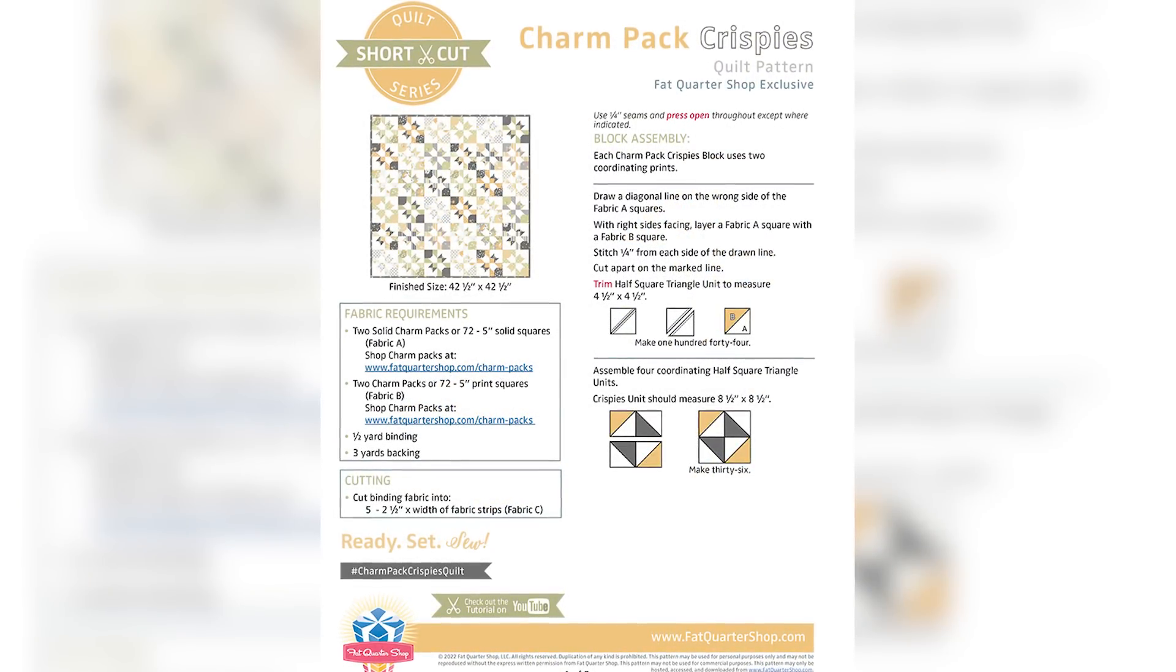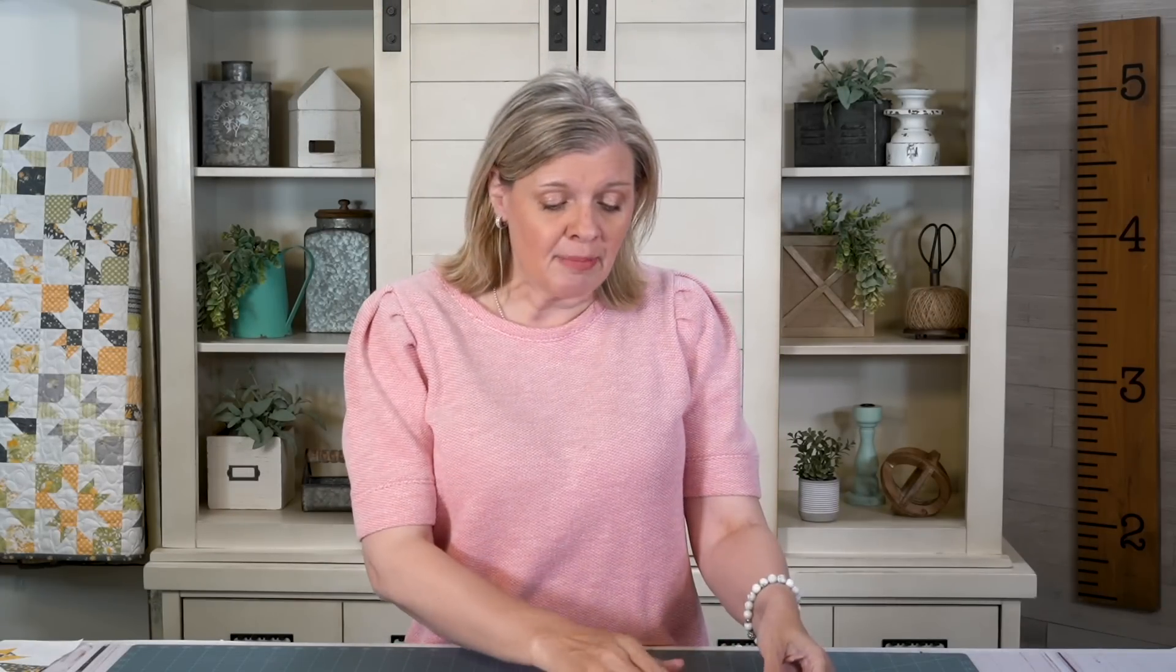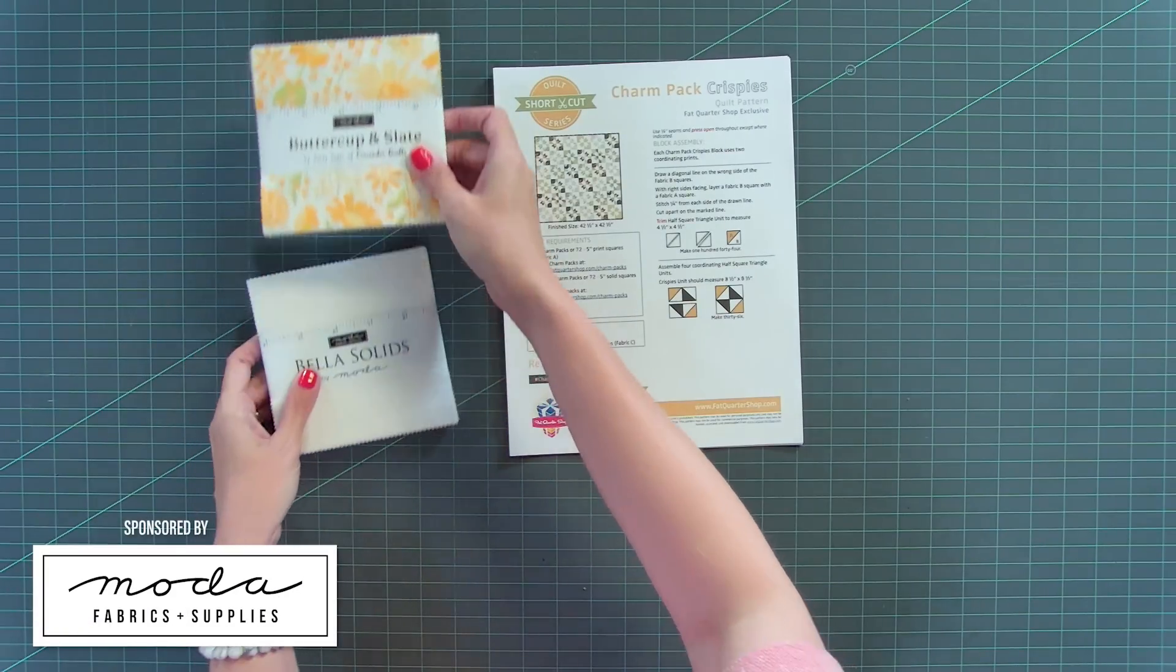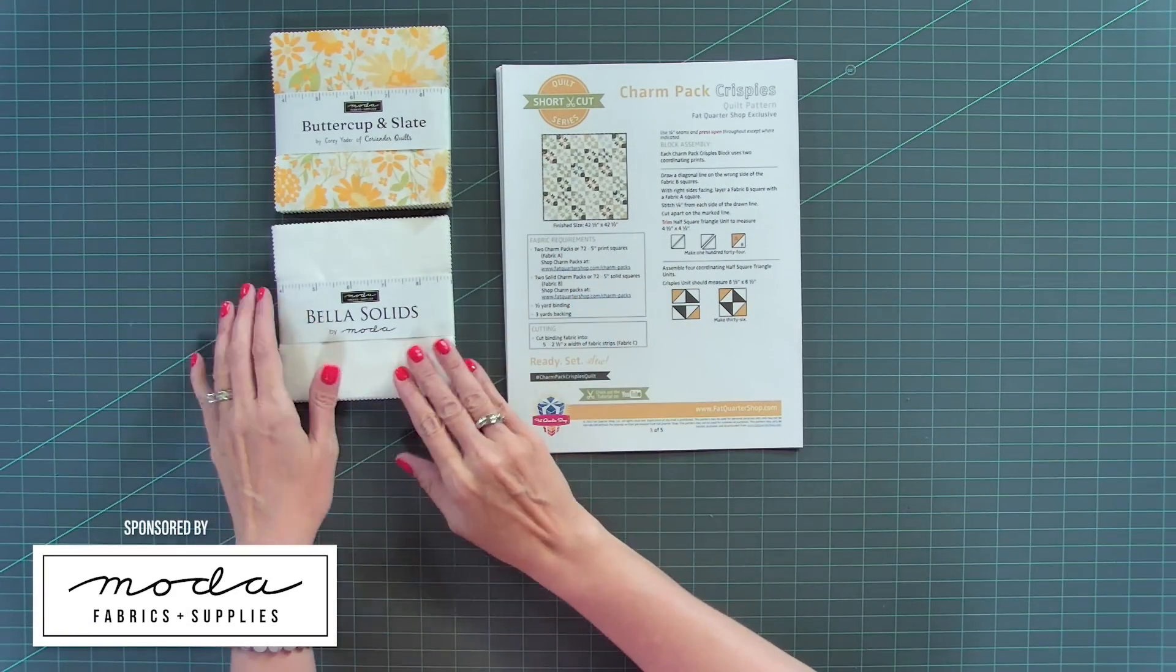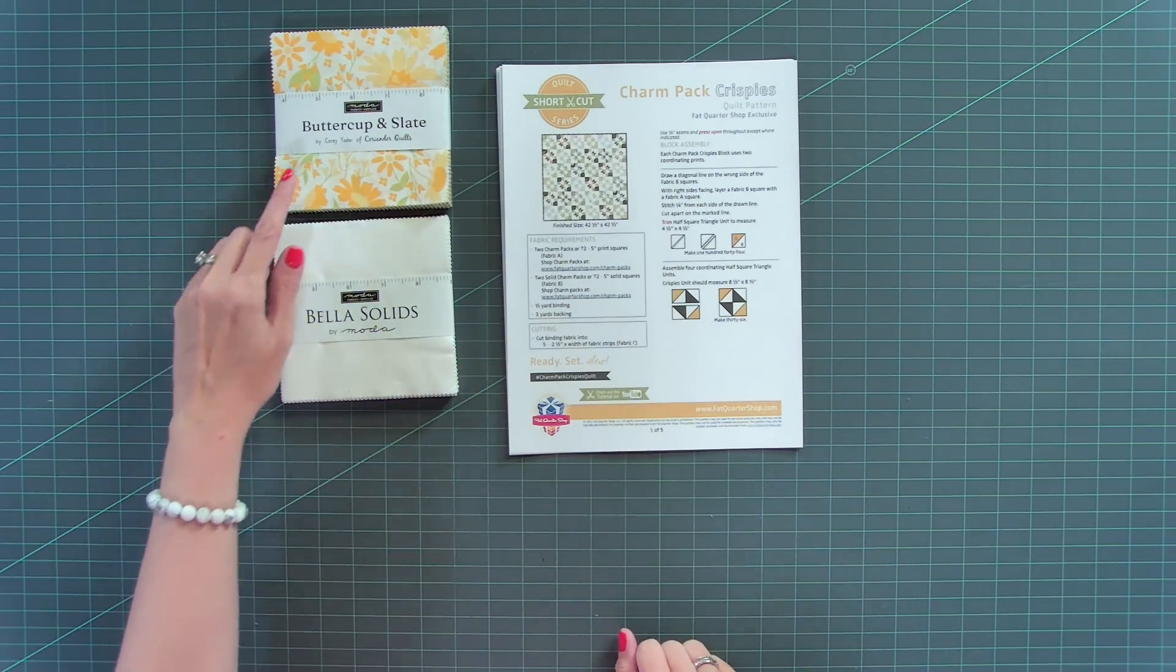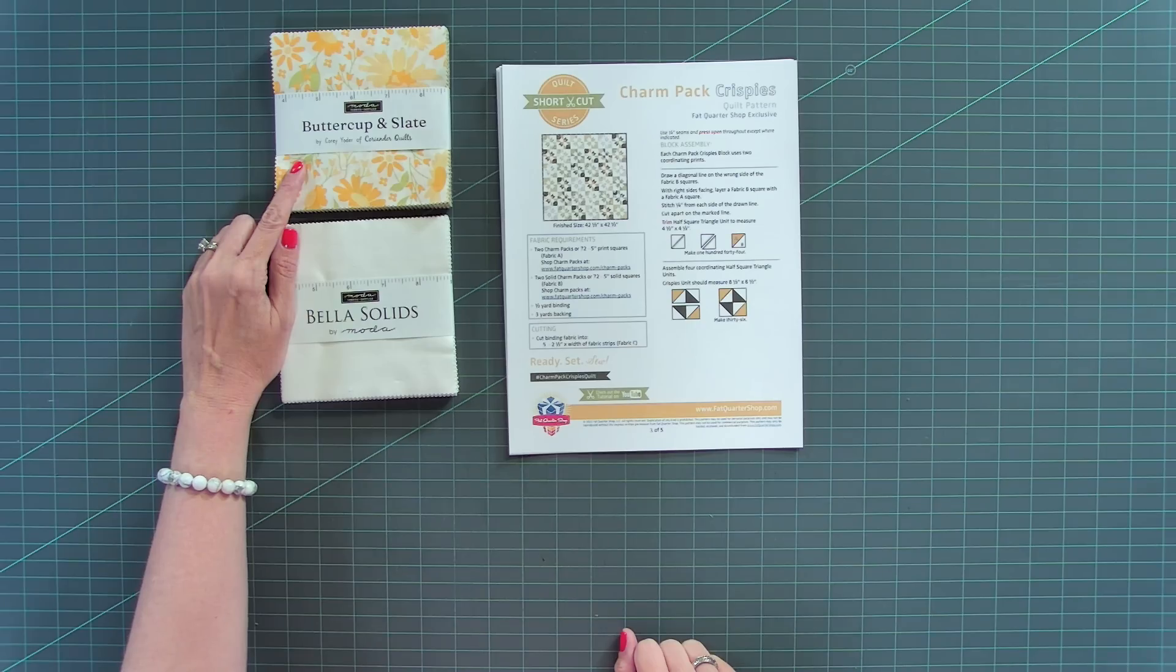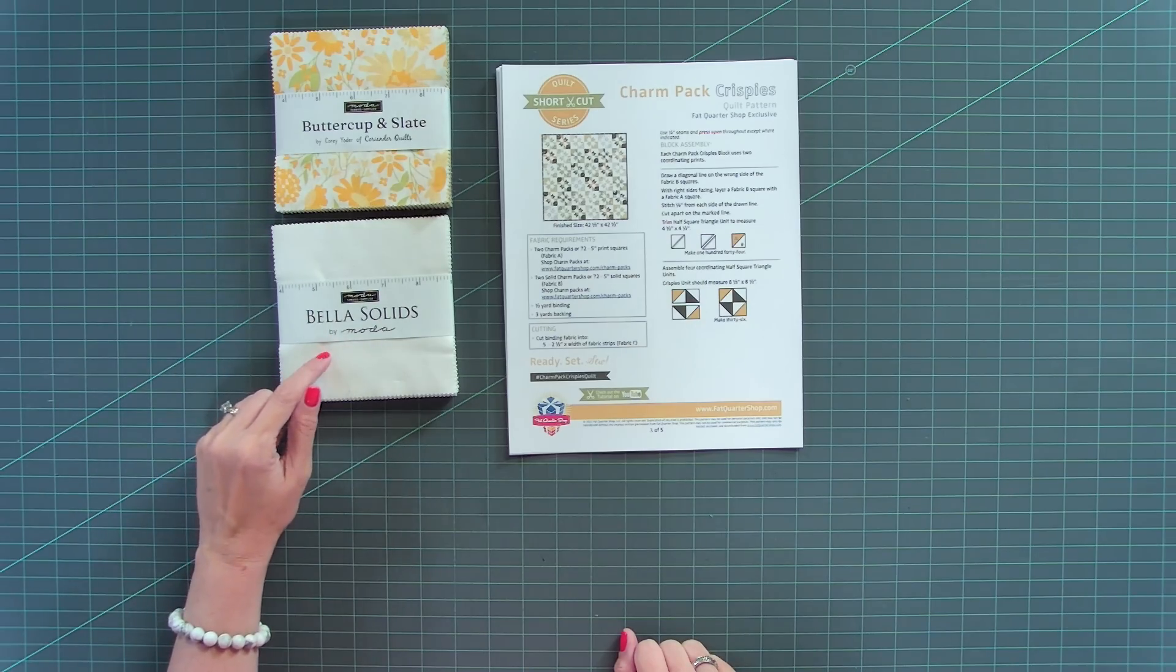The version I'm showing you today is a lap version but we also have free versions for crib, twin and queen, so you can check those out. For our lap version, you need two print charm packs and two solid charm packs. We're using Buttercup and Slate by Cory Yoder and we're using color 200 for the Bella solids.